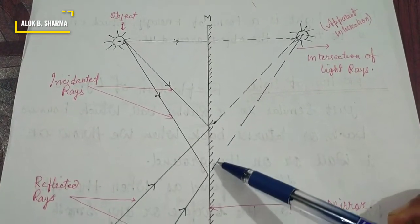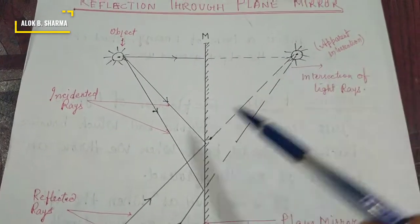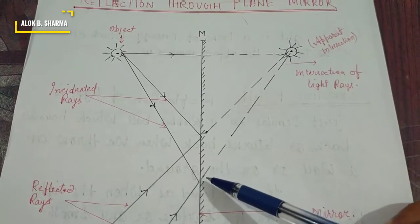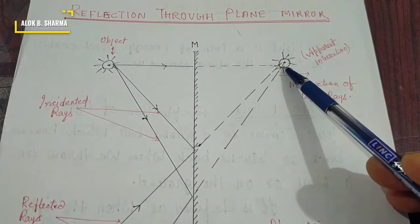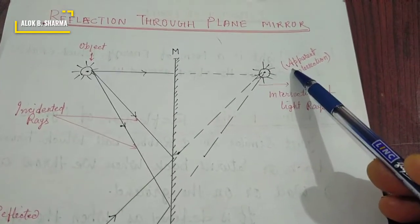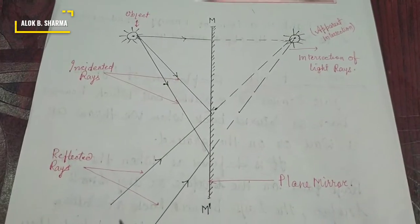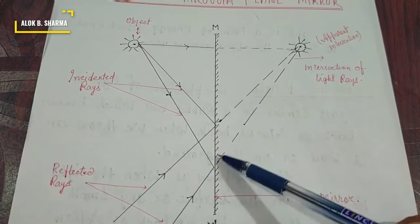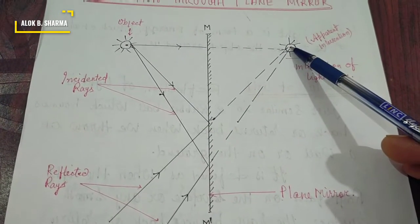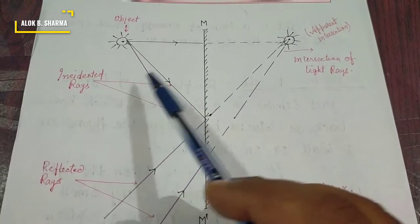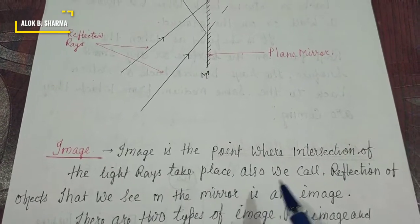When we extend the reflected rays backward with imaginary dotted lines, it appears that these lines intersect at a point behind the mirror. This is the apparent point of intersection, which is the image of the object. So this is how a plane mirror forms an image — the reflected rays, when produced backward, meet at a definite point called the image.